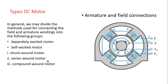In DC motors we have the same construction as DC generators — the types are also the same. The only difference is the direction of power flow. In DC generators we give mechanical and get electrical energy; here we give electrical and get mechanical as our output, so the direction of current flow is reversed.